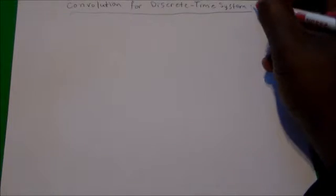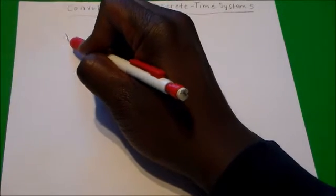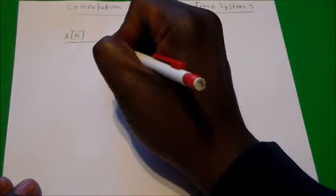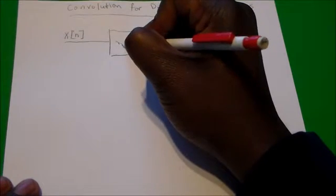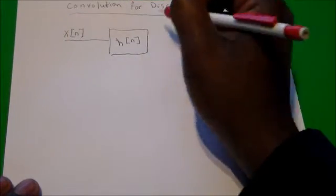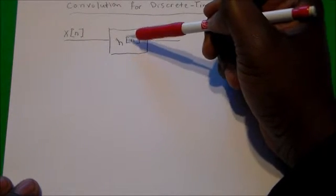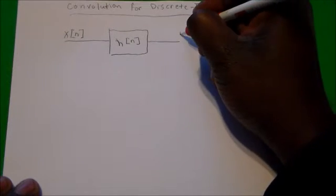In this video we will look at convolution for discrete time systems. For a discrete time system, we have some discrete input going into a system. That system has an impulse response, represented by h. Once the input goes in and interacts with the system, the system processes it using the impulse response and we get an output.